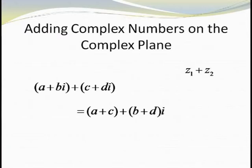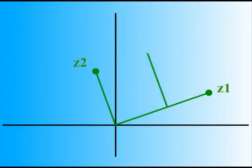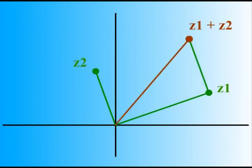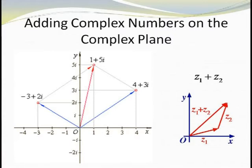Our final operation for the complex plane involves addition of complex numbers. Adding complex numbers is quite simple: we treat the two numbers the same way we would two binomials and just add like terms. That is, if z1 equals a plus bi and z2 equals c plus di, then z1 plus z2 equals (a plus c) plus (b plus d)i. The geometric interpretation for addition is identical to working with vectors. Consider z1 equals negative 3 plus 2i and z2 equals 4 plus 3i. Moving the line segment joining 0 to (4, 3) over to the point (−3, 2), the new endpoint is located at (1, 5), and indeed z1 plus z2 equals 1 plus 5i.